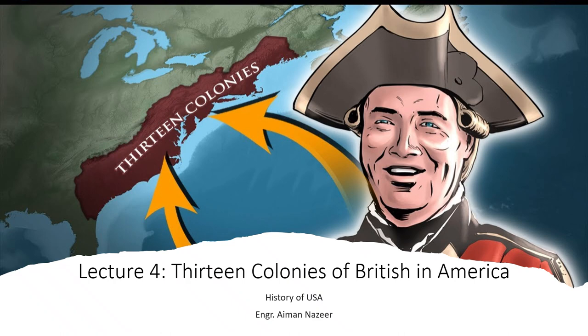We did not cover the mightiest colonizer of that time — the British. So today, students, we are going to cover the 13 colonies settled by the British in America. In the previous lecture, we studied why the British took more than 100 years to sail towards America and what factors finally took them there. Today we will study how and why the British settled 13 colonies in detail.